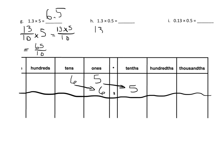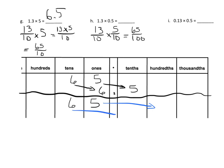Now here we've got 13 tenths times 5 tenths — that gives us 65 over a hundred. So 65 over a hundred: here's our 65, because we've got 6 tens and 5 ones. But now our denominator is 100, which means our digits are going to get moved two columns to the right, so now we have 0.65. We properly call that 0.65, meaning we have nothing in the ones value.